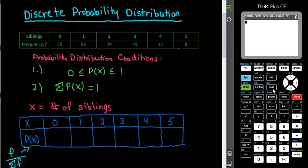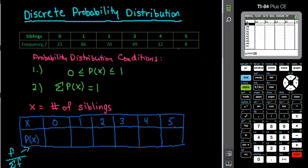So what we would do is we would go to stat and edit, and if we have any information in L1 and L2, we want to clear that out. In L1, I am going to put my random variable x, my 0, 1, 2, 3, 4, and 5.